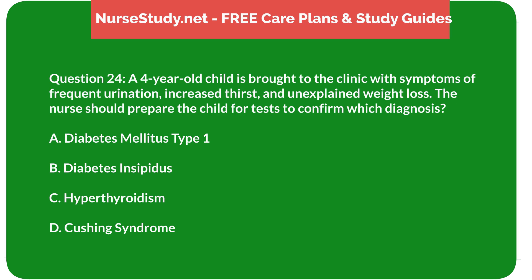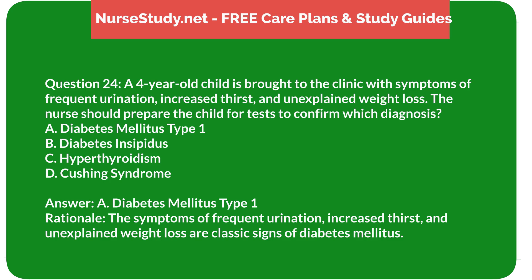Question 24: A 4-year-old child is brought to the clinic with symptoms of frequent urination, increased thirst, and unexplained weight loss. The nurse should prepare the child for tests to confirm which diagnosis? A) diabetes mellitus type 1, B) diabetes insipidus, C) hyperthyroidism, D) Cushing syndrome. Answer: A) diabetes mellitus type 1. Rationale: The symptoms of frequent urination, increased thirst, and unexplained weight loss are classic signs of diabetes mellitus.